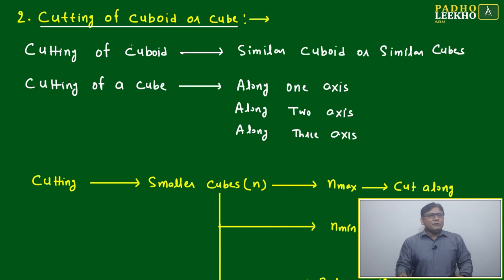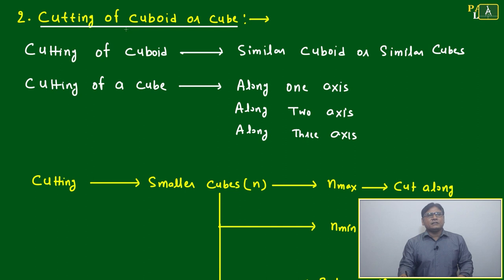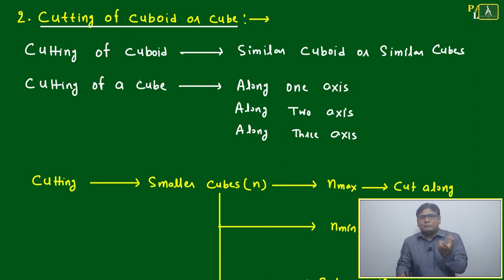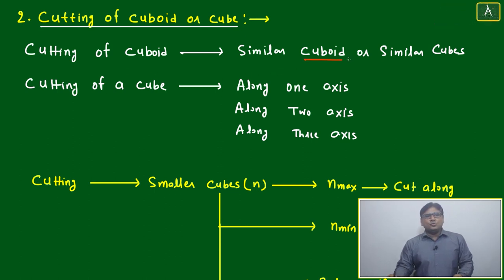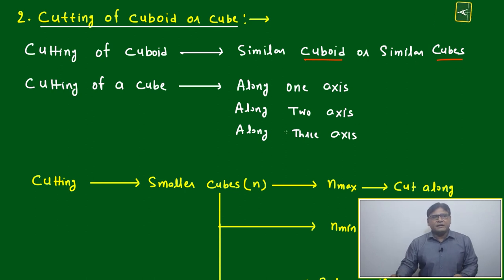Now we come to the second point: understanding the cube or cuboid in terms of cutting — how we can cut it and what similar type of cuboid or cube will form after cutting. Cutting of a cuboid can be done in two ways to make similar cubes.